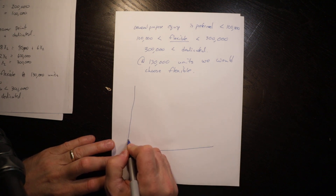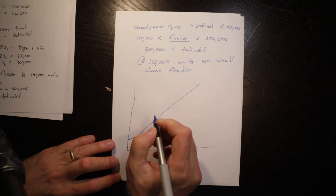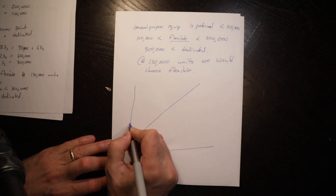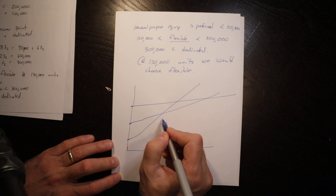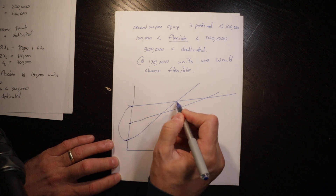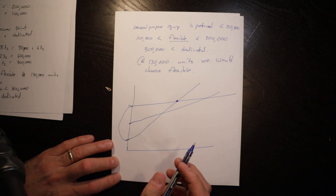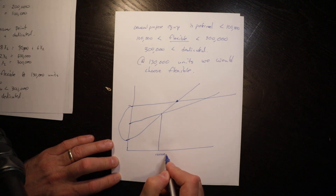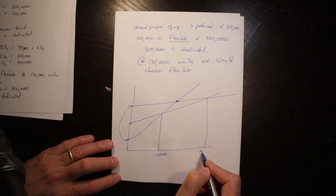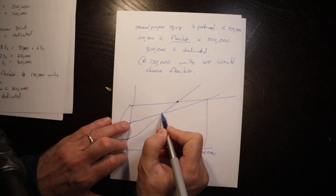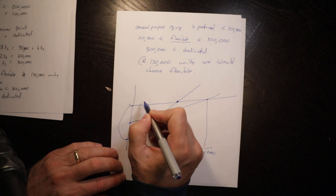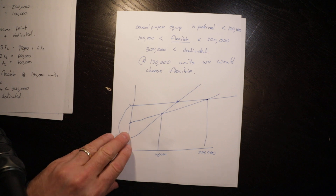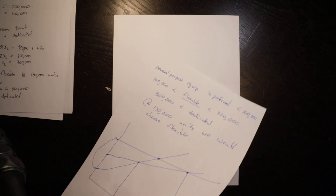General purpose starts at $150,000 and goes up with a slope of 10. Flexible starts at $350,000 and goes up at a slower slope. Dedicated starts at $950,000 and goes up at the slowest slope. General purpose and dedicated do eventually cross, but they cross at a point we're not interested in — because flexible is already cheaper in that region. We only worry about crossover points where a line is actually the lowest cost option.